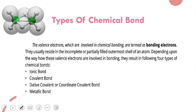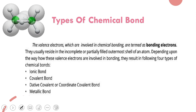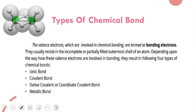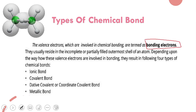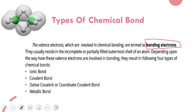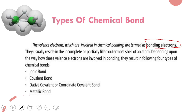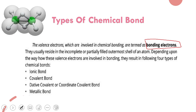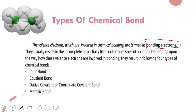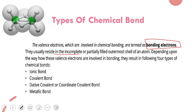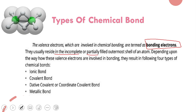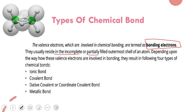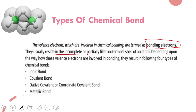What kind of electrons take part in the formation of a chemical bond? The valence electrons which are involved in chemical bonding are termed as bonding electrons. The electrons present in the last shell, which are incomplete or partially filled, are involved in bond formation. Depending upon the way these valence electrons are involved in bonding, they result in the following four types of chemical bond.